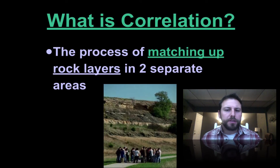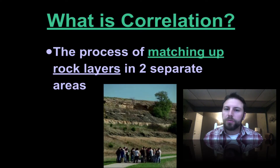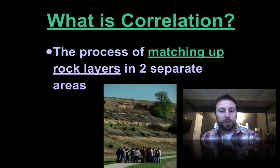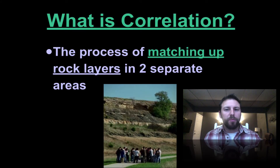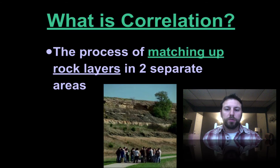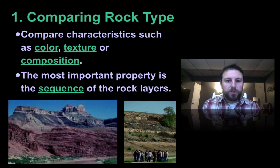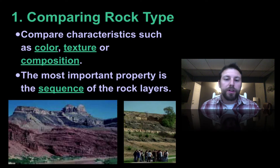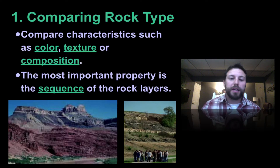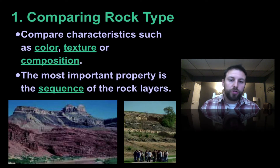Correlating rock layers is nothing more than matching up rock layers in two separate areas. We kind of did something like this when we talked about South America being closely connected to Africa during the time of Pangea. We can look at rock layers in two completely different areas to see the relative dates at which things happened. When correlating rocks, we look for the color, texture, and composition of the rocks. If the color, texture, or composition is the same, those rock layers most likely formed at the same time, and we can use this information to help us sequence rock layers.